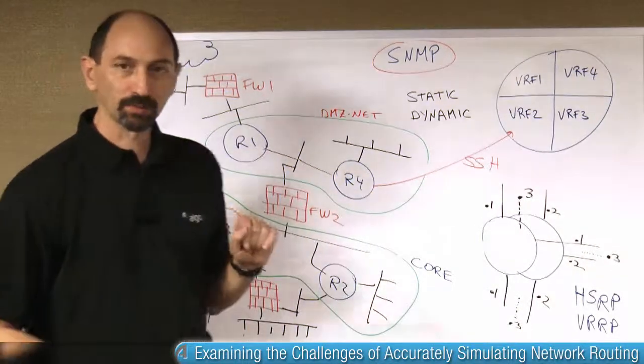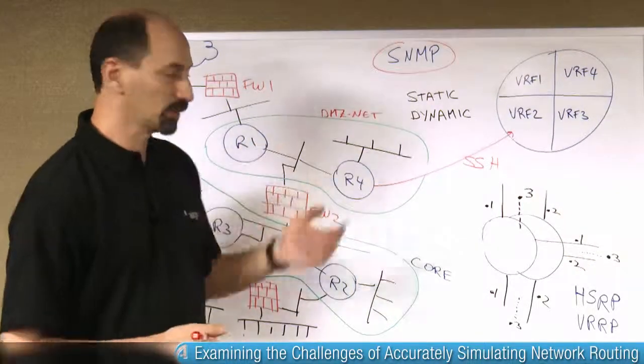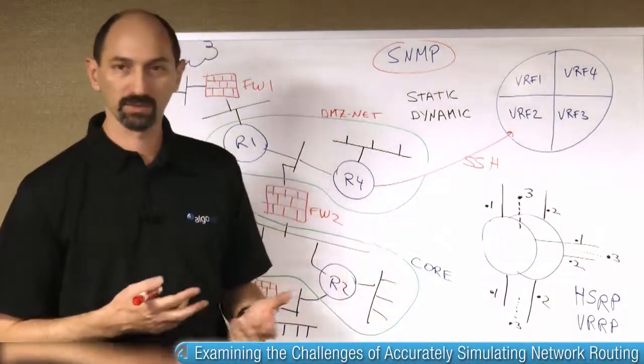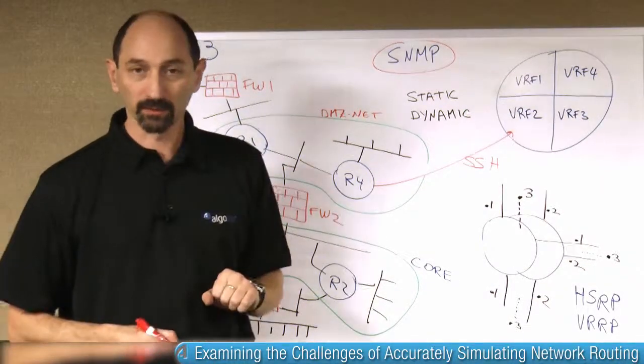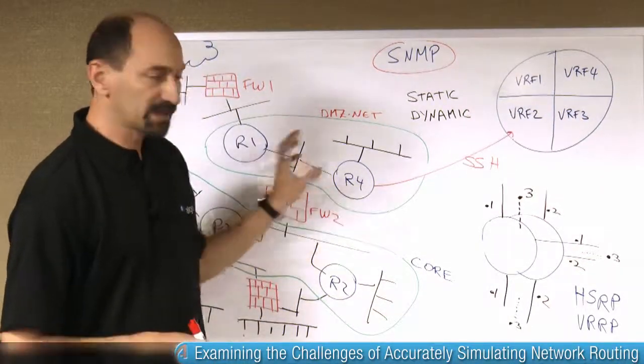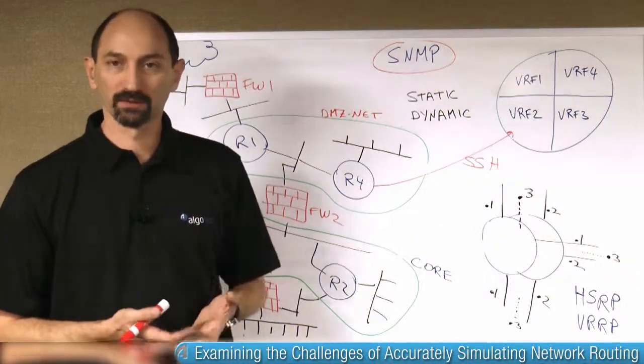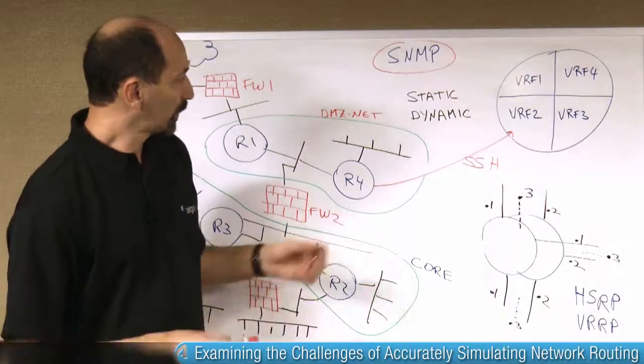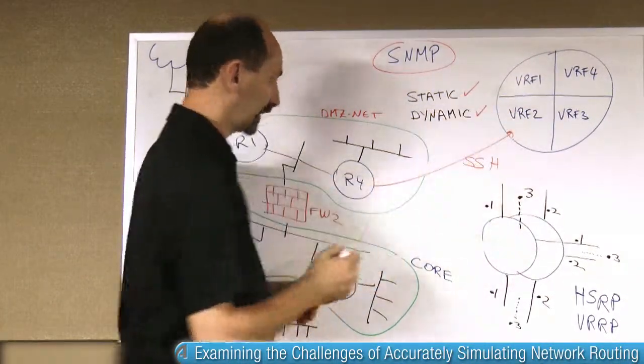these routers are probably constantly exchanging routing information between them, using some routing protocols such as BGP, OSPF, RIP, or some other routing protocol. And all of these dynamic routes are critical to the accuracy of the routing decision. So you need to be able to extract both the static routes and the dynamic routes.